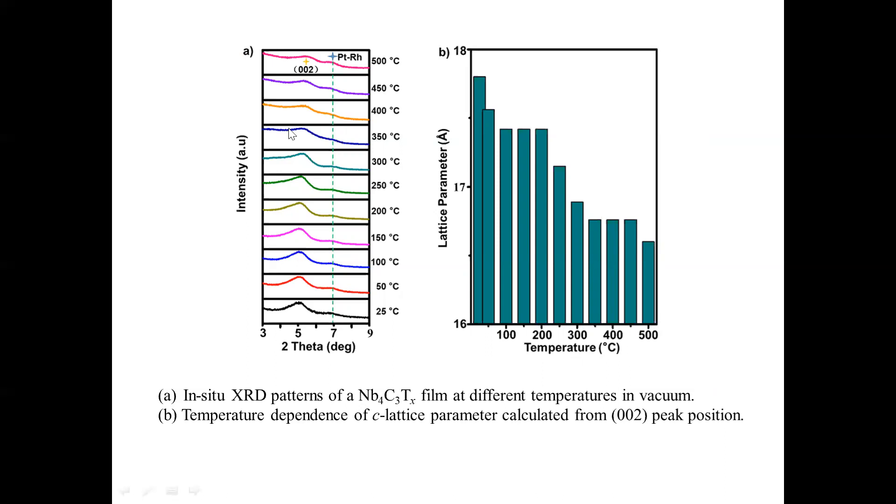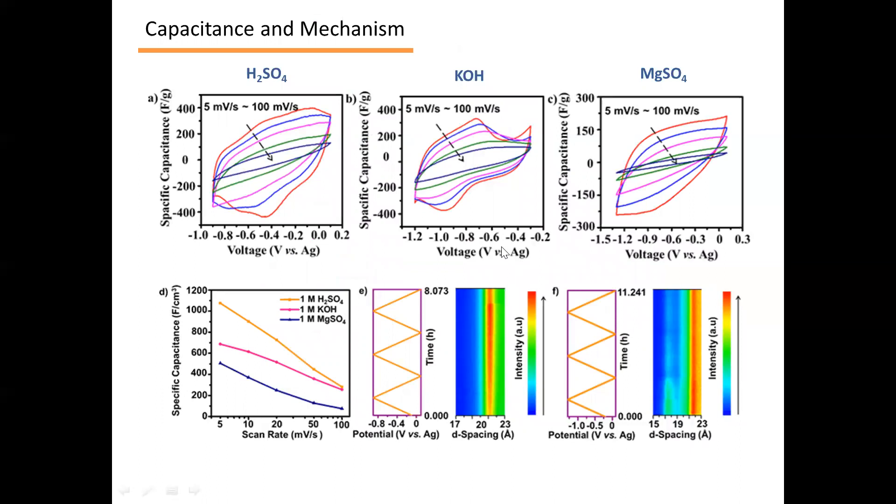With the increase of temperature, it can be clearly observed that the 002 peak gradually moves to a larger angle from about 5.01 to 5.31. Corresponding to the d-spacing between layers decreased from 17.7 angstroms to 16.6 angstroms. Therefore, we conclude that MXene flexible membrane can maintain a d-spacing of 16.6 angstroms at least up to 500 degrees.